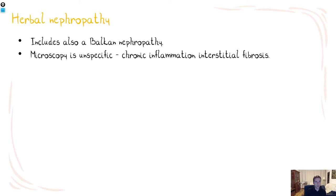Herbal nephropathy is a tubular interstitial disease caused by usage of various healing herbs, usually in the form of tea. This group includes Balkan nephropathy, which is essentially endemic herbal nephropathy in the Balkan region. The microscopy is unspecific — there is a general picture of chronic tubular interstitial nephritis with chronic inflammation, interstitial fibrosis, and tubular atrophy. Therefore, clinical correlation is usually necessary for diagnosis.